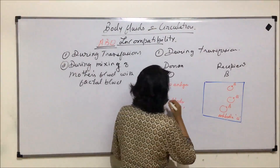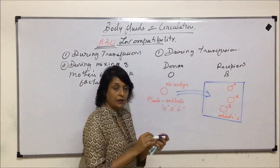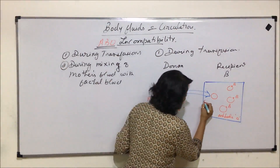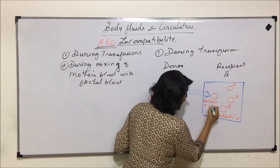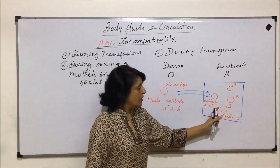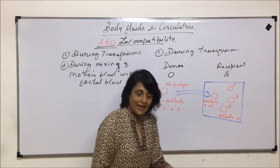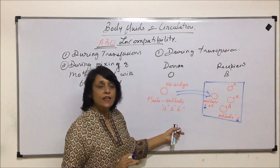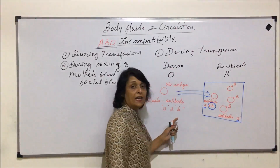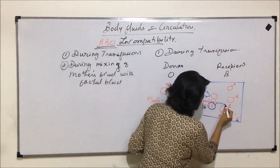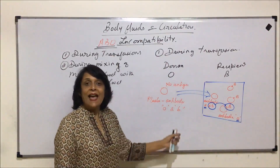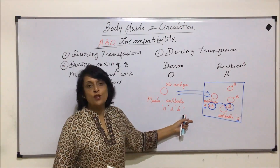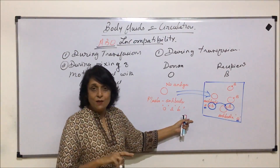When this blood is transfused to the recipient, RBCs without antigen enter along with antibodies A and B. The recipient already has antibody A, so the donor's anti-A causes no new problem. However, the donor's antibody B reacts with antigen B on the recipient's RBCs. Again, RBCs get destroyed, resulting in anemia and jaundice.